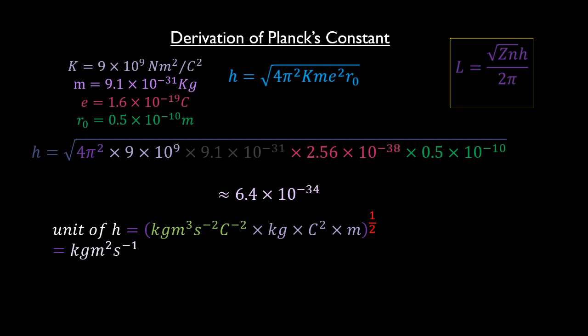Also, the unit joules second in base units is given as kilograms meters squared per second squared, which is the base units of the joules times the second. This gives the same unit as that of h. So, we can now write h equals 6.626 exponential minus 34 joules second and call it Planck's constant with confidence.